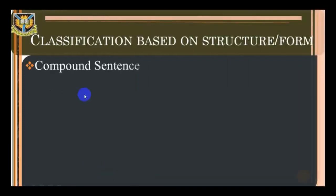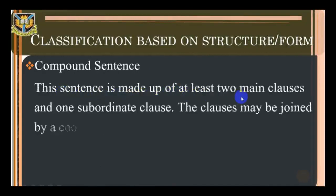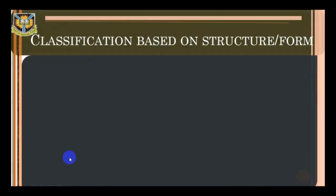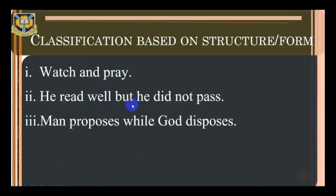Compound sentence: this sentence is made up of at least two main clauses and one subordinate clause. The clauses may be joined by a coordinating conjunction, colon, semicolon, or comma. Examples: 'Watch and pray,' 'He read well but he did not pass,' 'Man proposes while God disposes.'